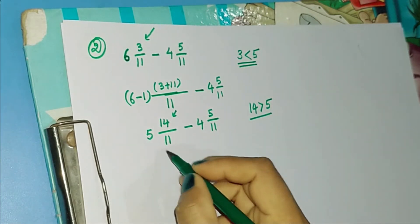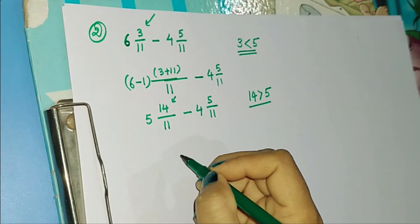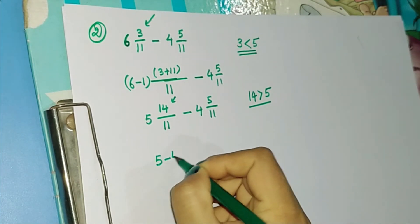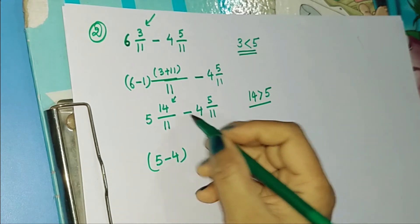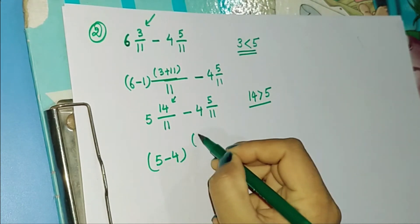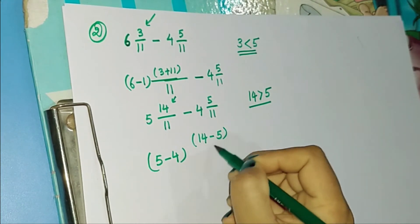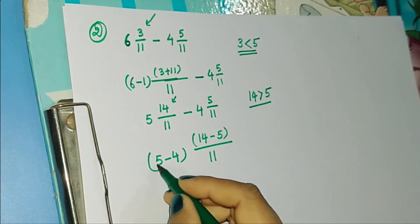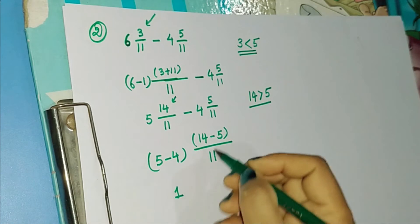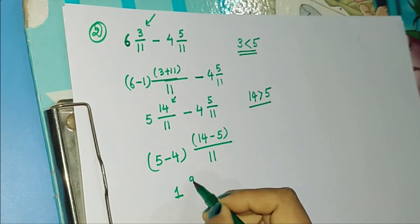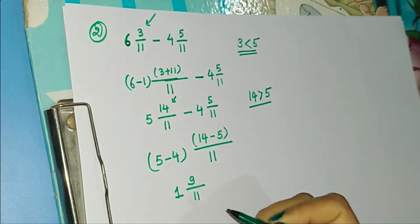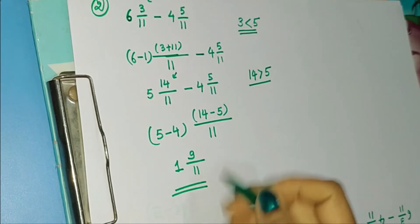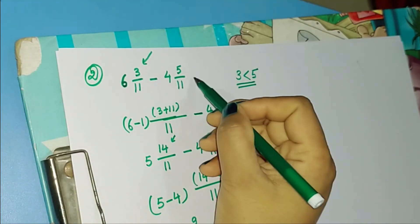Now we follow the same method as in question number 1. We subtract the whole part from the whole part, that is 5 minus 4. Then we subtract the numerators, that is 14 minus 5, and keep the denominator as it is. So 5 minus 4 is 1, 14 minus 5 is 9, and the denominator is 11. So 1 9/11 is the solution for the second question.